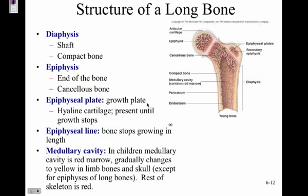The structure of a long bone: the diaphysis is the shaft — the length of the bone — made up of compact bone and hollow in the middle, filled with bone marrow. The epiphysis is at each end of the bone — so there are two epiphyses, one at the top and one at the bottom, with the diaphysis in the middle.